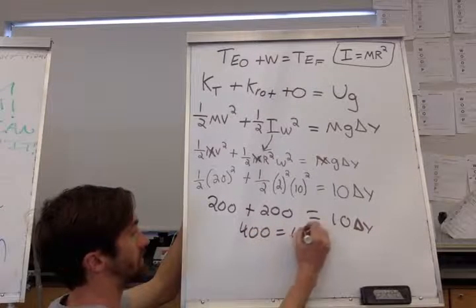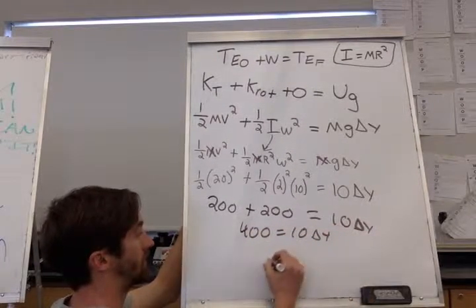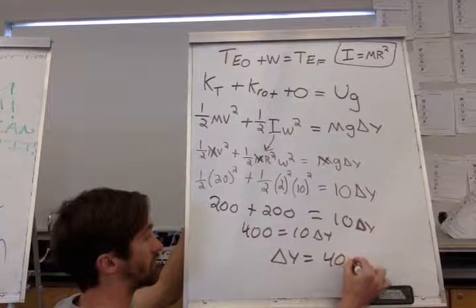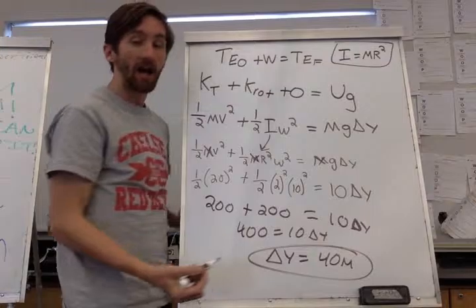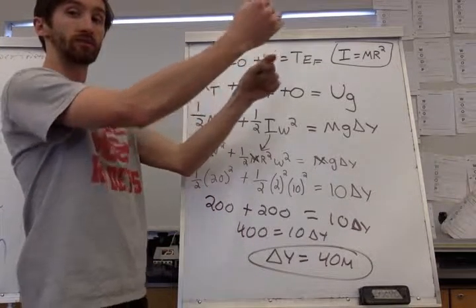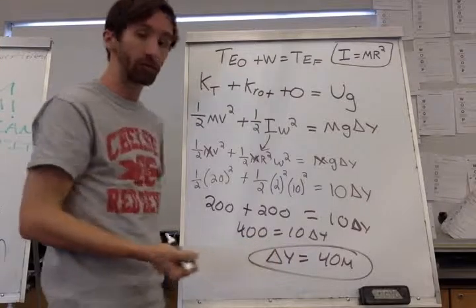So at its highest point, when that hoop rolls up and comes to a stop, it's going to be 40 meters high.